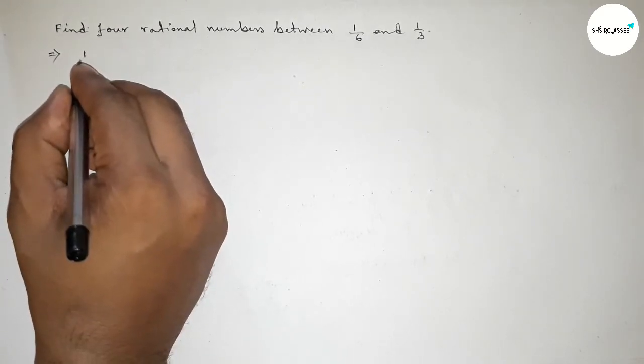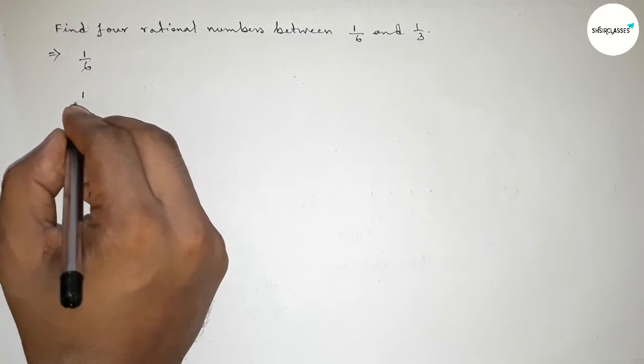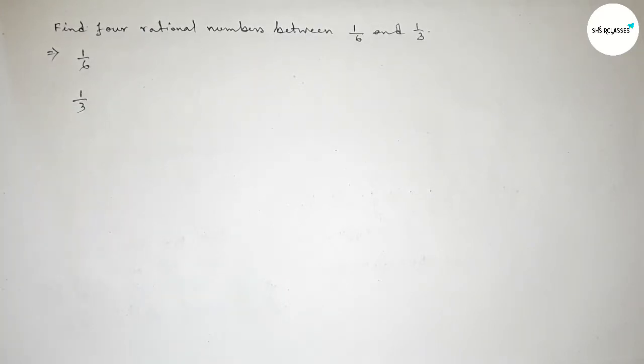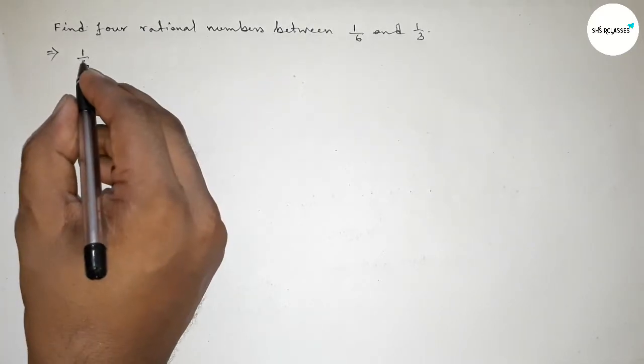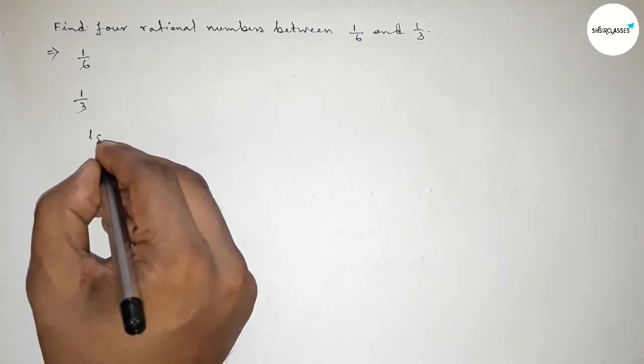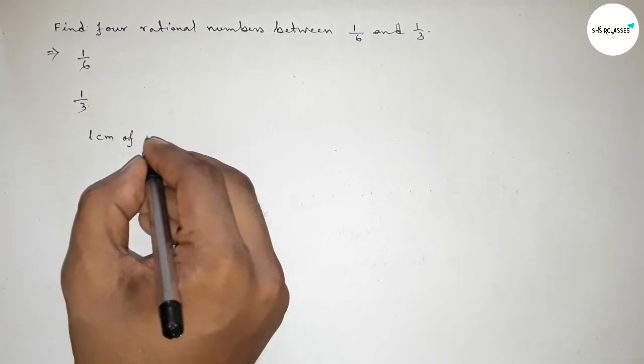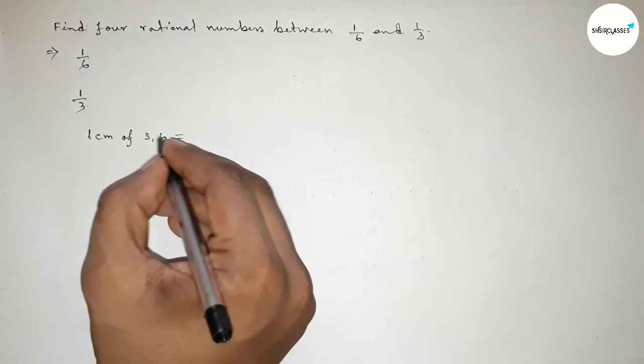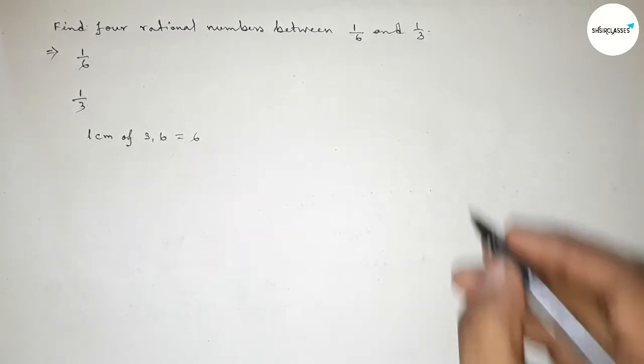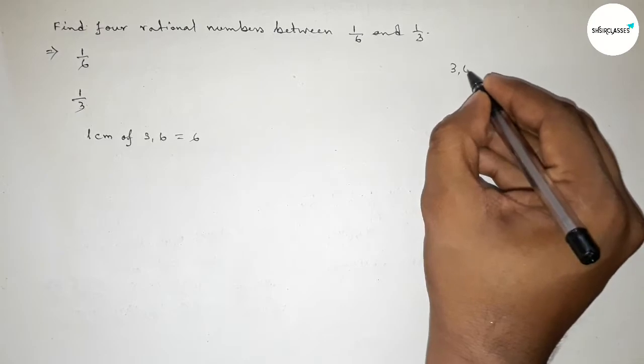Here given two numbers, 1 over 6 and 1 over 3. The denominators of both numbers are not the same, so first we have to find out the LCM of 6 and 3. So the LCM is obviously 6.